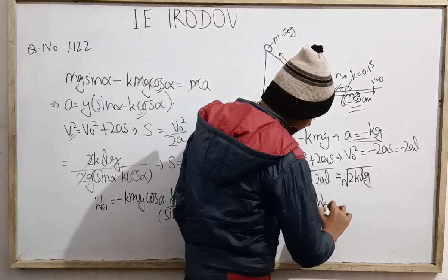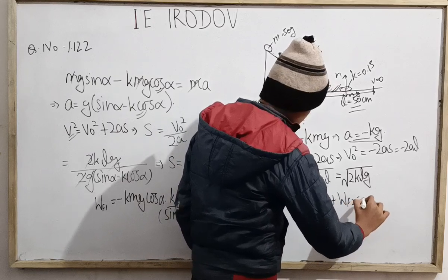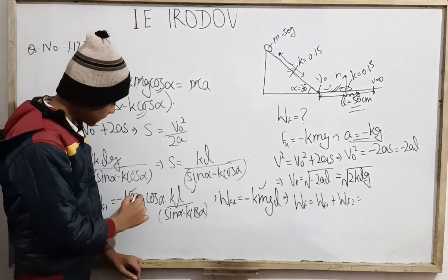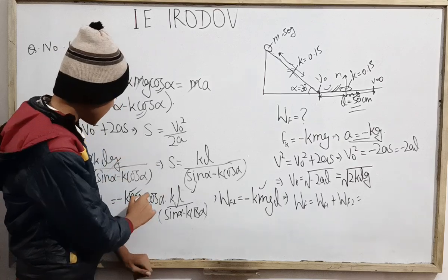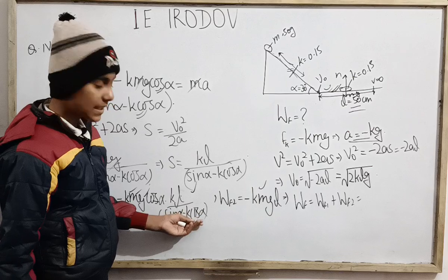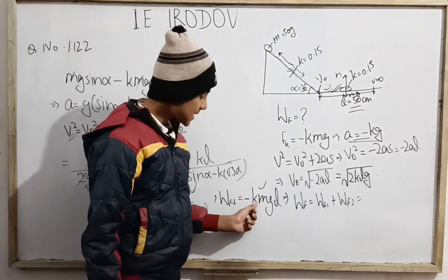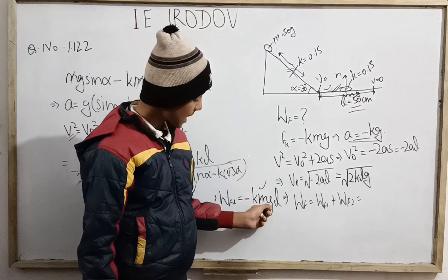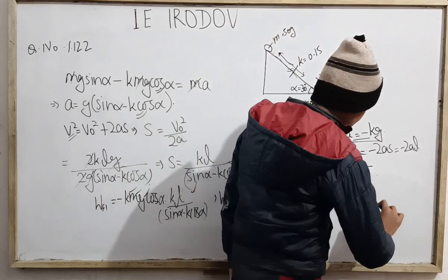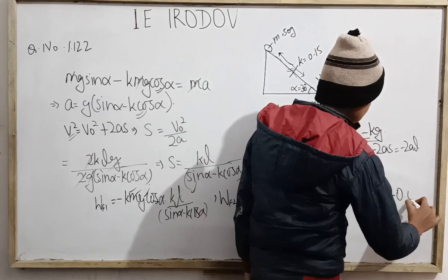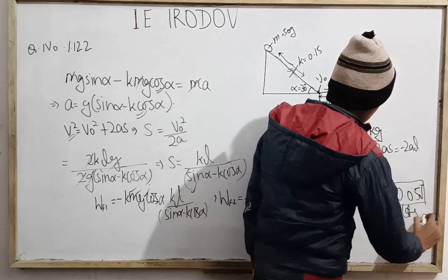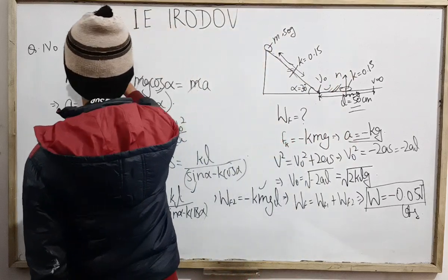Total work done by friction = W₁ + W₂, i.e., work done in first motion plus that in second course of motion. Substituting all values: k = 0.15, m = 0.05 kg, g = 9.8 m/s², cosα = √3/2, sinα = 1/2, l = 0.5 m. After calculation, the result is a negative value as expected, since friction opposes motion and acts opposite to displacement. The final answer is -0.05 joules.